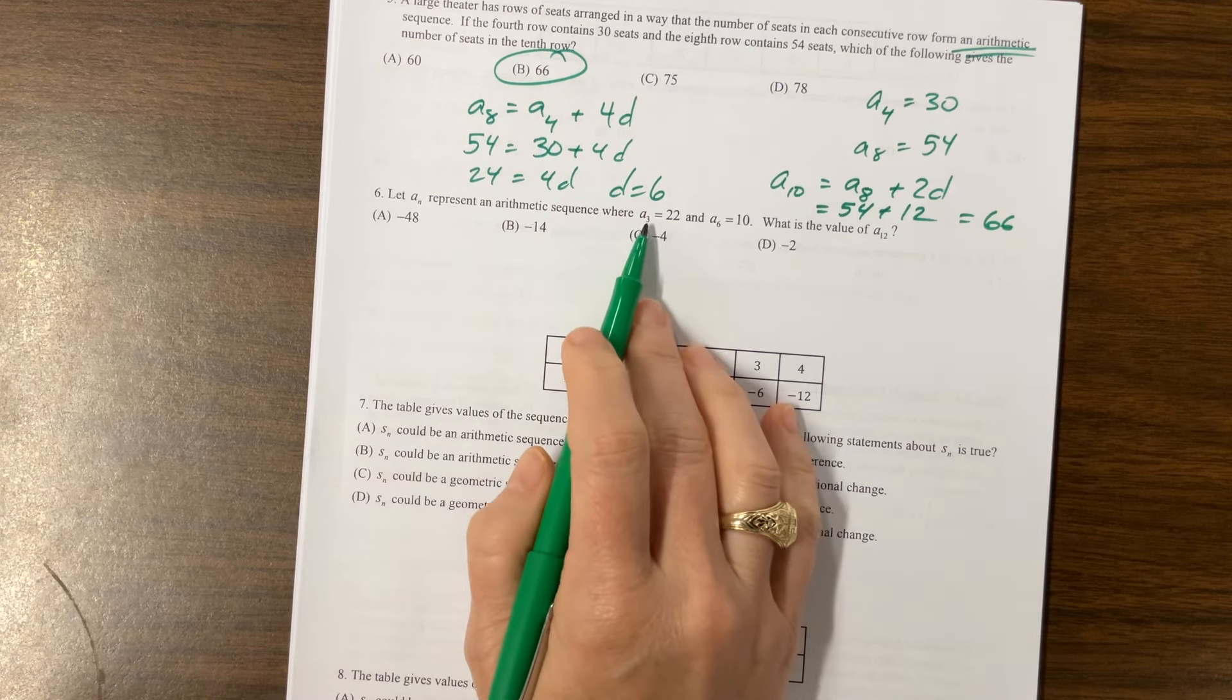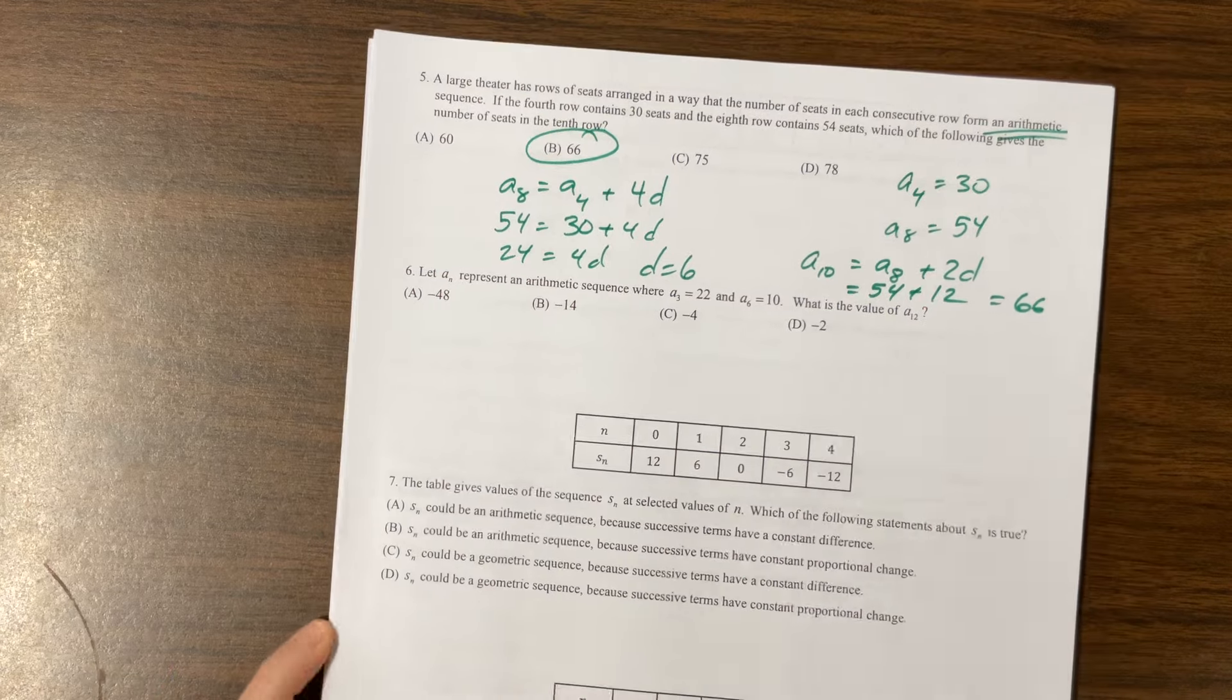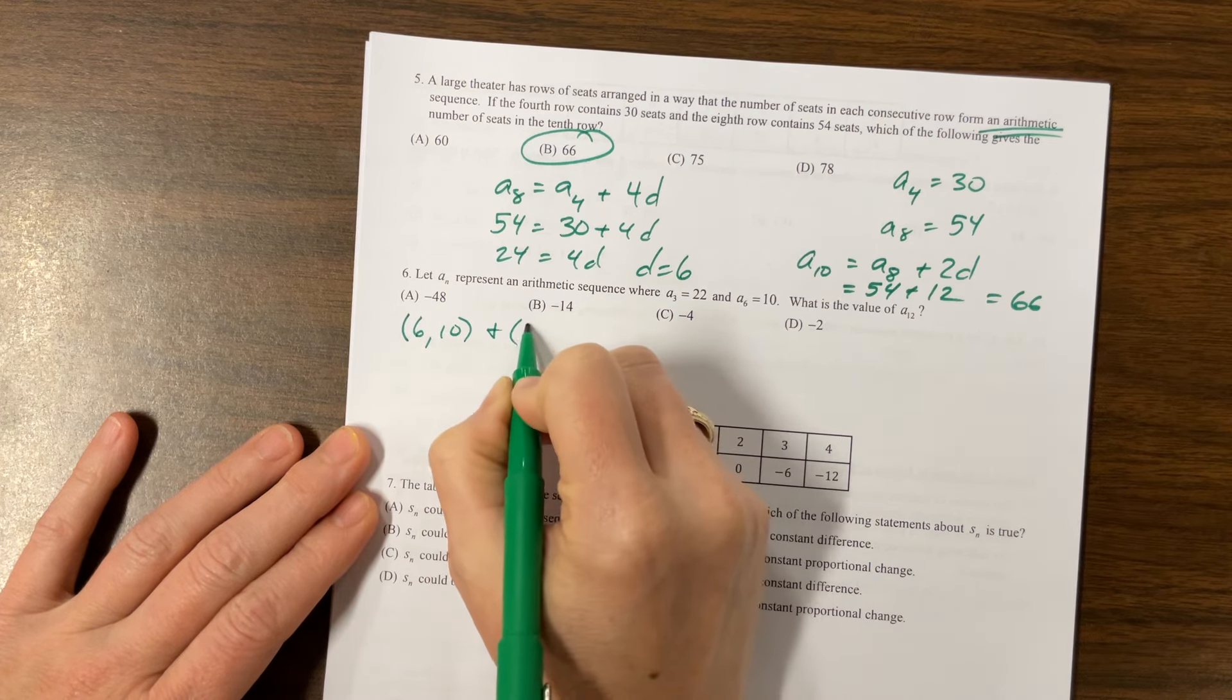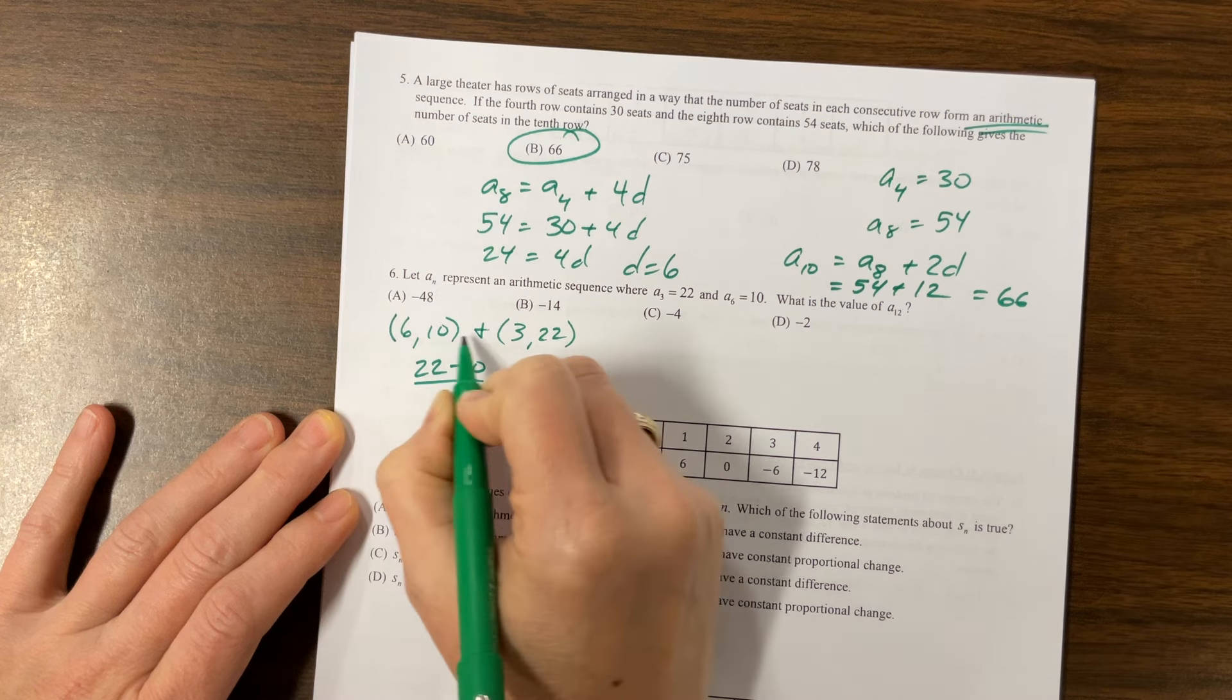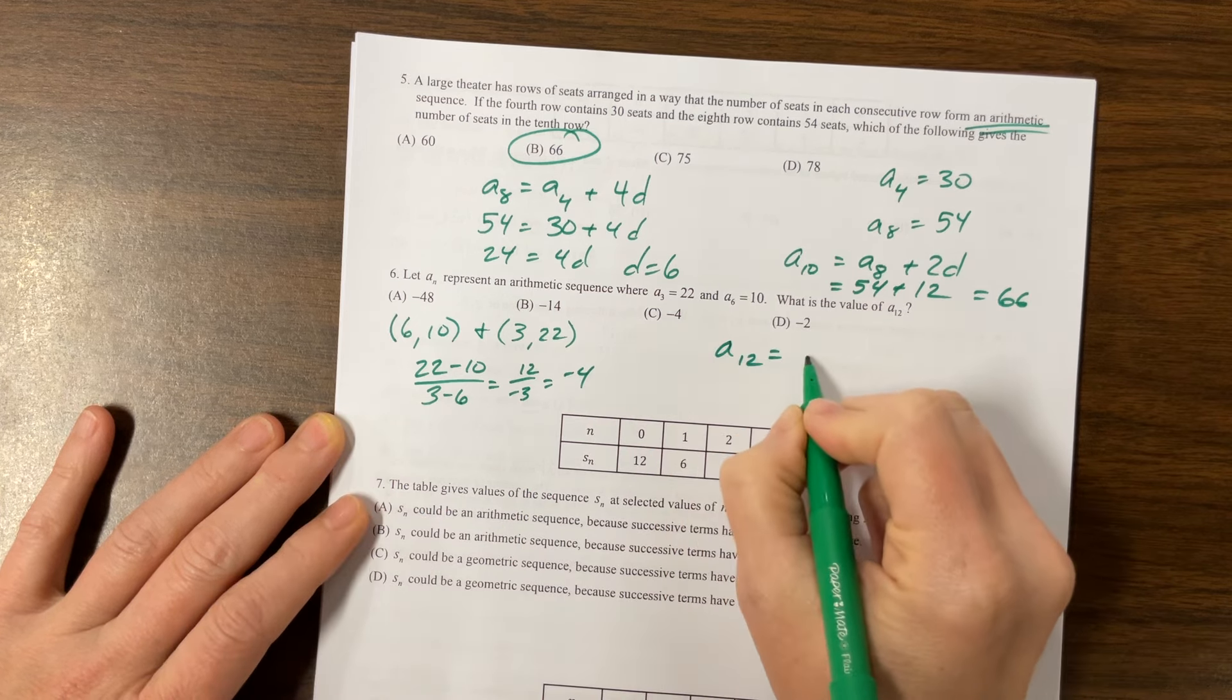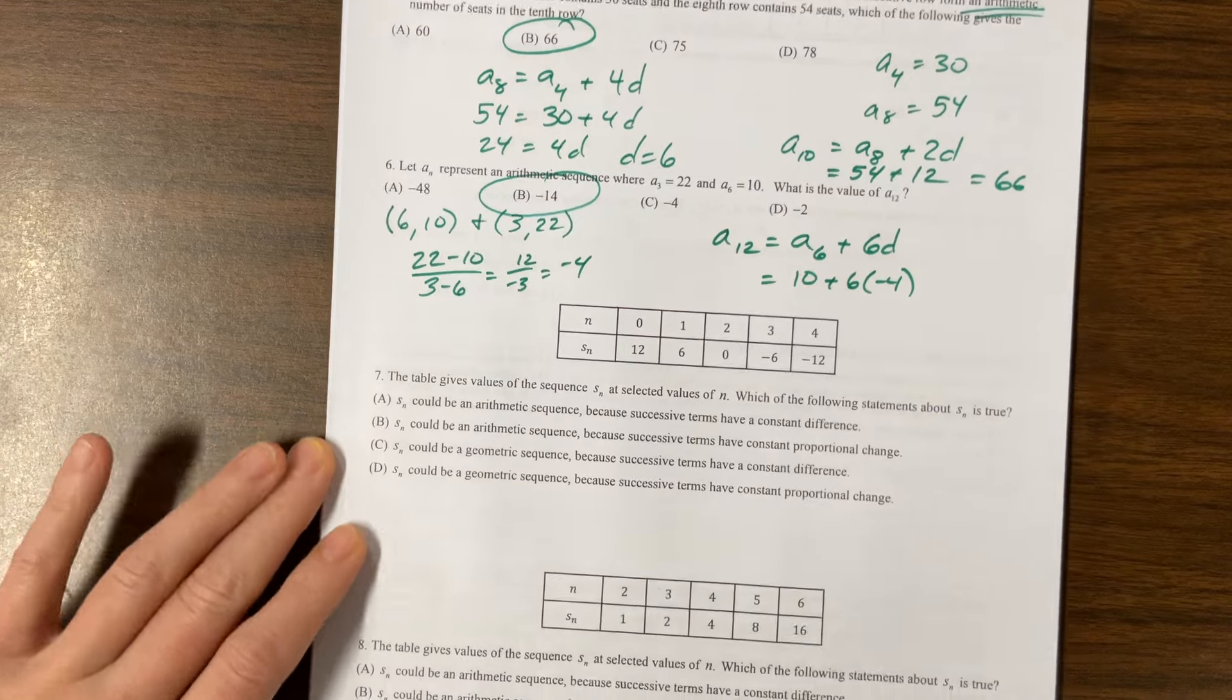A sub n represents an arithmetic sequence where a sub three equals 22, a sub six equals 10. What's the value of a sub 12? I would do the same thing as what we just did. My common difference, or let me do a different way and see which way you like better. You could think of this as a linear cause it's arithmetic. It behaves like a linear function. And so you can think of slope. And so it's like having the point 6, 10 and the point 3, 22. Now I don't always do this cause it's not exactly how we do sequences, but I have 22 minus 10 over three minus six. And so this is a 12 over a negative three, which is a negative four. So my common difference is my slope is negative four. So a sub 12 would be equal to a sub six plus the common difference six more times. So 10 plus six times negative four. So that's negative 24 plus 10 is negative 14.